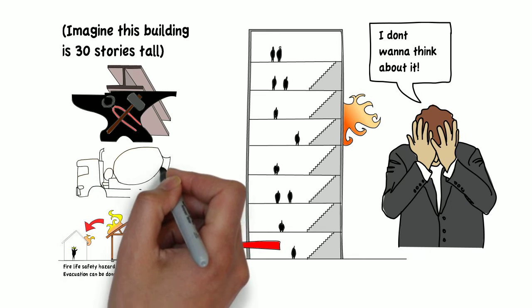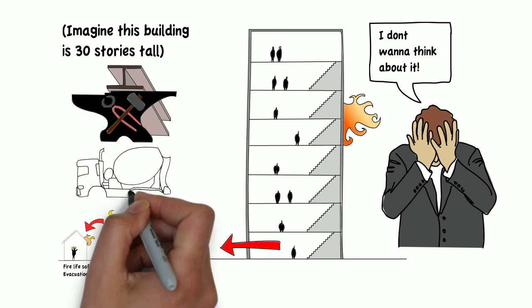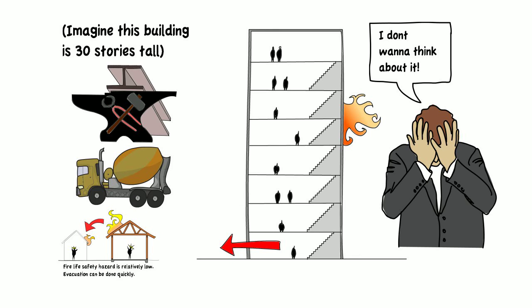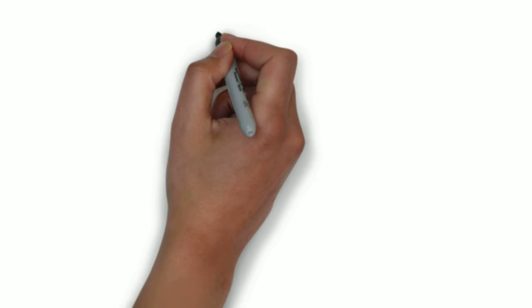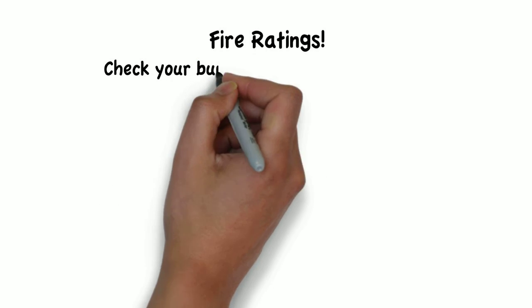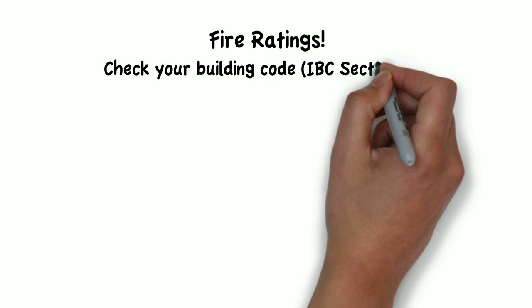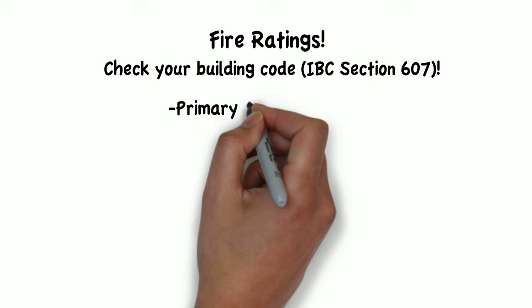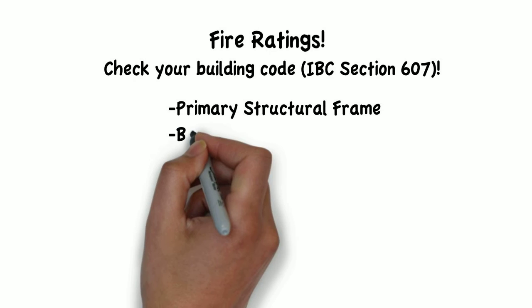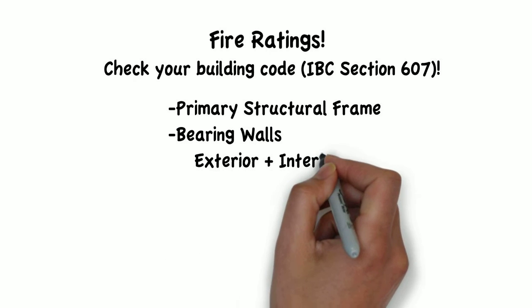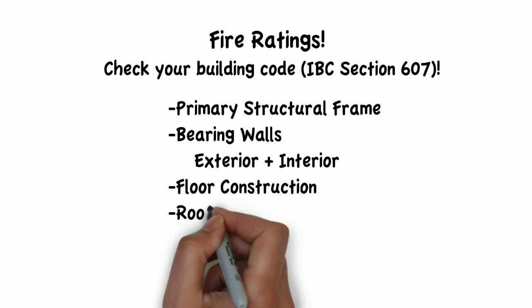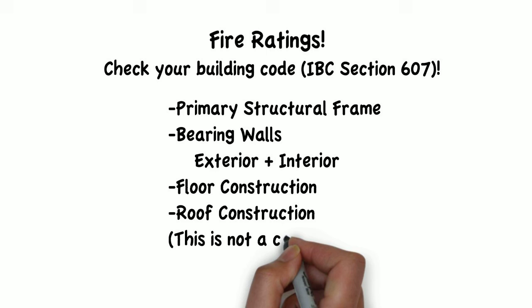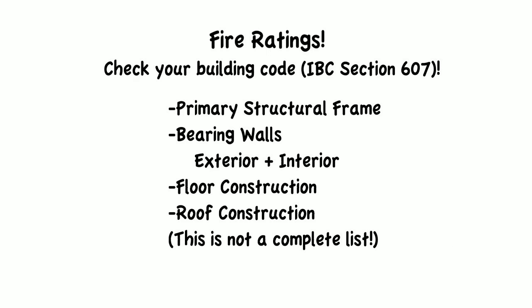But using concrete and steel alone doesn't always provide the protection you need. That is why there are also fire rating requirements to protect specific building elements. The building code specifies the types of systems that are most important for fire life safety - the structural frame, bearing walls, floor systems, and roof systems.